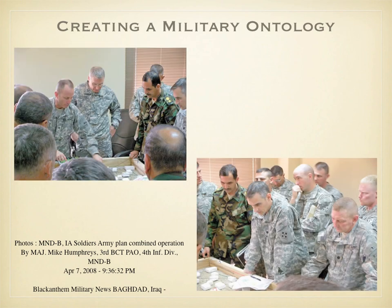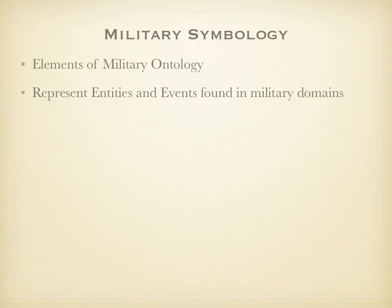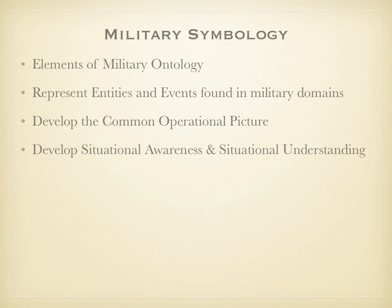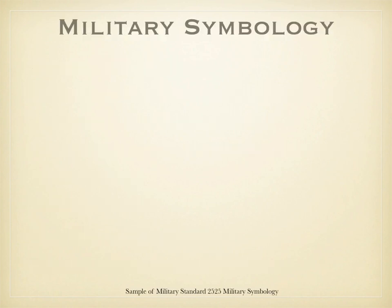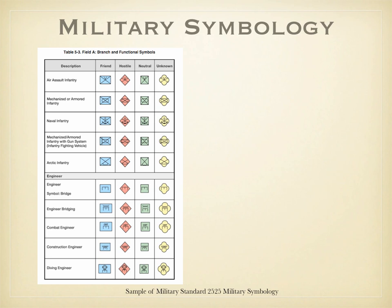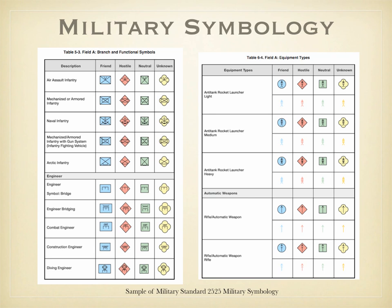Here we see military planners participating in an ontological process that involves a terrain model for an area of operations. Military symbols are elements of a military ontology. They represent the entities and events found in a military domain. They are used to develop the common operational picture and to develop situational awareness and situational understanding. They are used in operational design and to task organize forces. Military symbols are used even to design and create information networks, and overall they enhance the military decision-making process. These symbols depict types of military organizations and types of military equipment, to include their functions and capabilities as well as friend, adversary, and neutral roles.